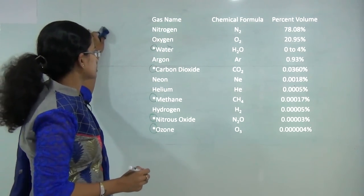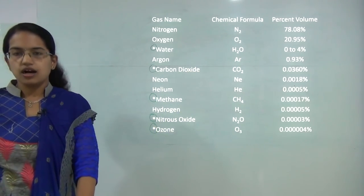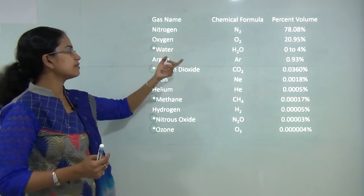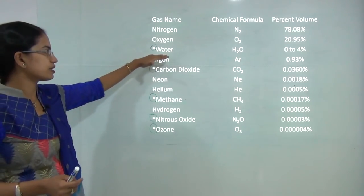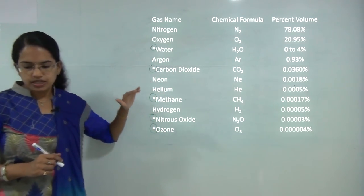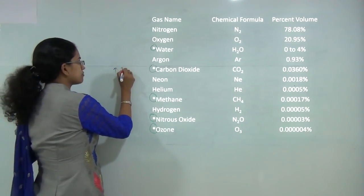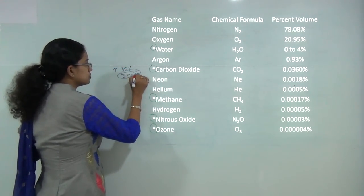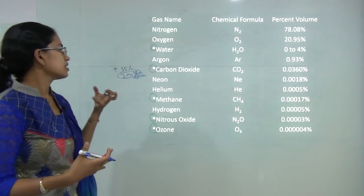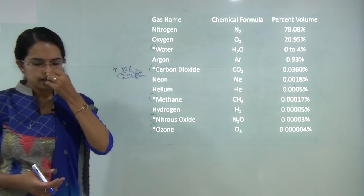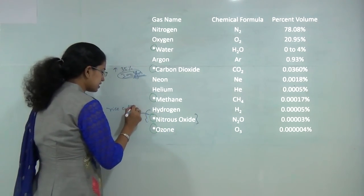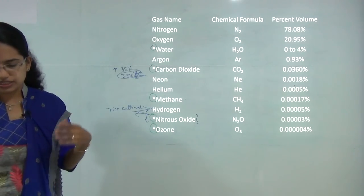Water vapour helps in maximum redistribution of energy by means of latent heat, with tropical areas having excessive water vapour compared to polar areas. Argon is mainly used in light bulbs. The percentage of carbon dioxide has increased by around 35% in the last 300 years, due mainly to global warming, exhaust from vehicles, burning of fossil fuels, combustion, and deforestation. Nitrous oxide is another important gas found in rice fields and from fossil fuel burning, eutrophication, and biomass burning.